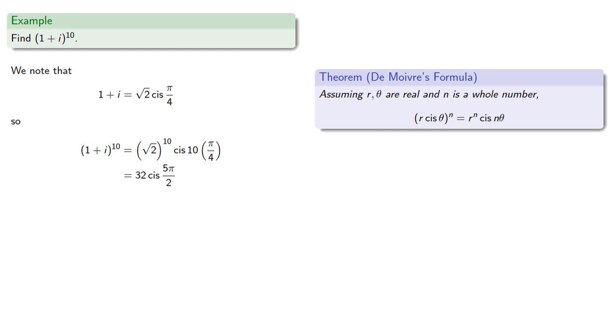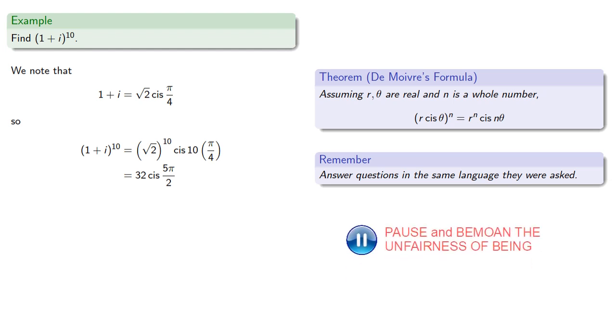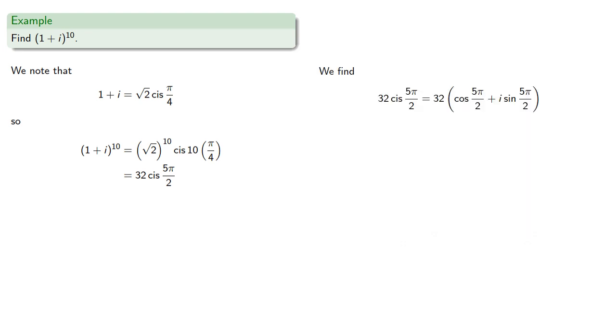But wait, remember, we should always answer the question in the same language it was asked. And the complex number was given in rectangular form, so we should also answer in rectangular form. And so that means we need to find cis(5π/2), so computing that gives us our final answer, 32i.